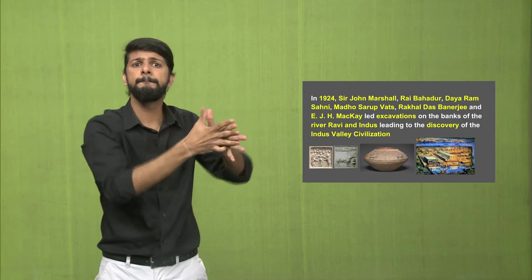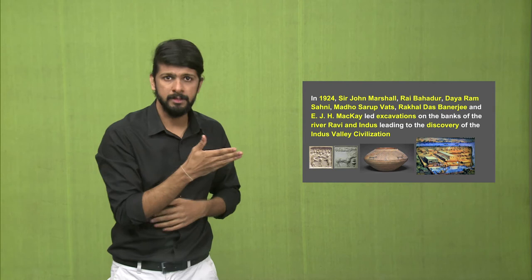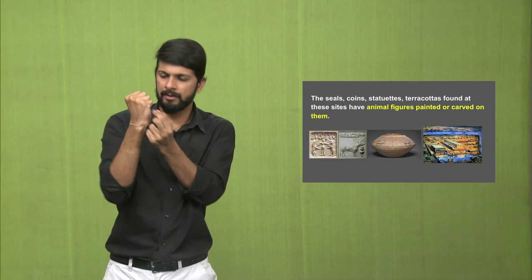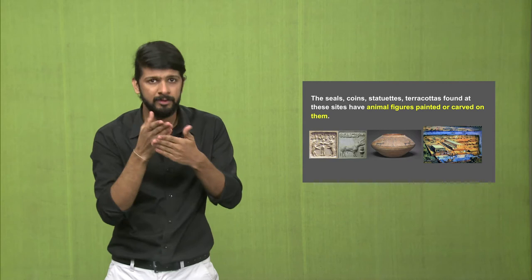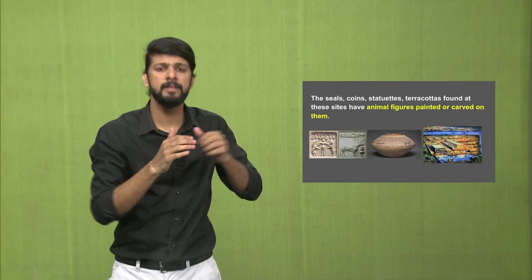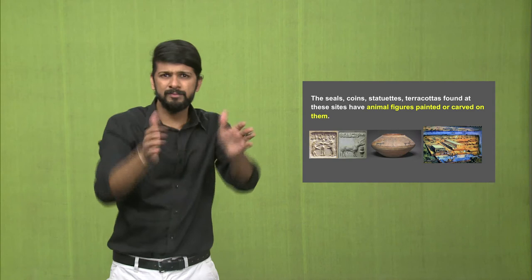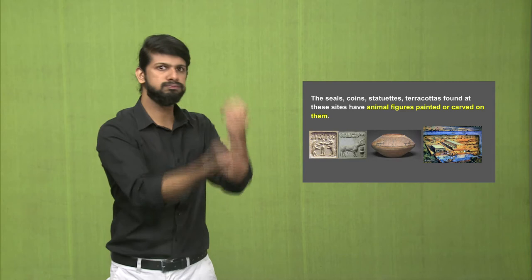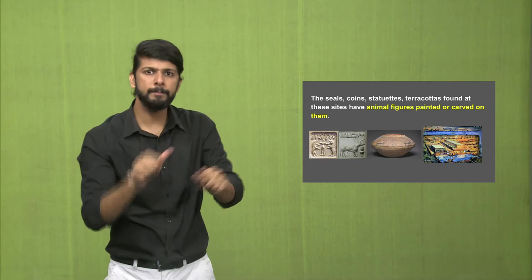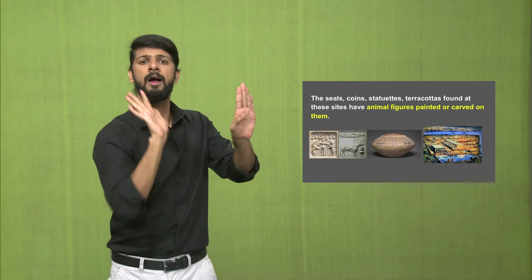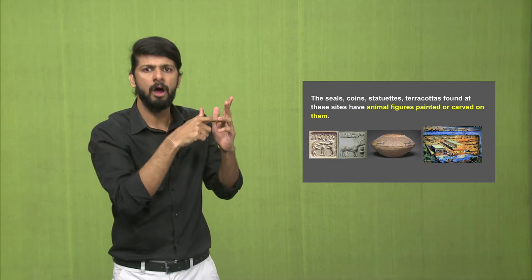This was a massive civilisation, and they found a lot of artefacts. They found seals which had animal figures carved or painted, coins which also had figures on them, statues, and terracotta jars and pottery. At the Indus Valley Civilisation excavation sites, most of these artefacts had some or other form of animals, birds, and other figures painted or carved on them.